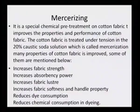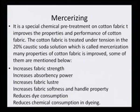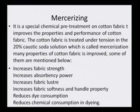Finally, we come to mercerizing. It is a chemical pre-treatment of cotton that improves the property and performance of the cotton fabric. The fabric is treated under tension with 20 percent caustic soda solution. Mercerization increases fabric strength, absorbency power, fabric luster, softness and handling property, and dye consumption is also improved with mercerized cotton. Chemical consumption in dyeing is also reduced if mercerizing is done to the fabric. With this we have come to an end of the chapter called Pre-treatments.